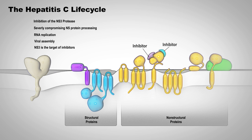Although designing an inhibitor was difficult due to the shallow substrate binding groove on NS3, two compounds — telaprevir and boceprevir — are now currently available for use.